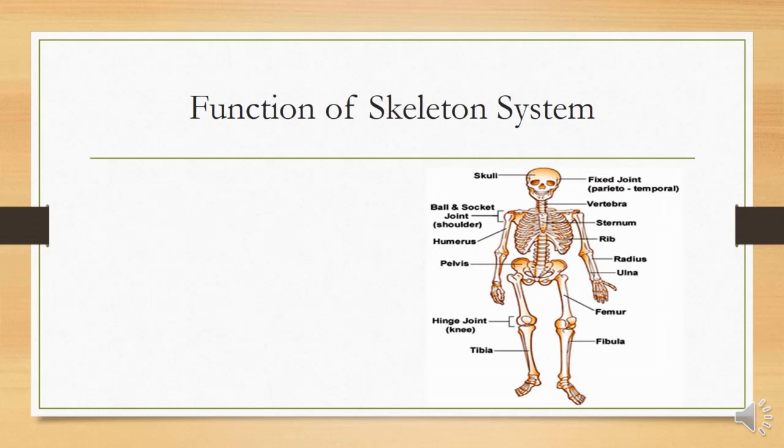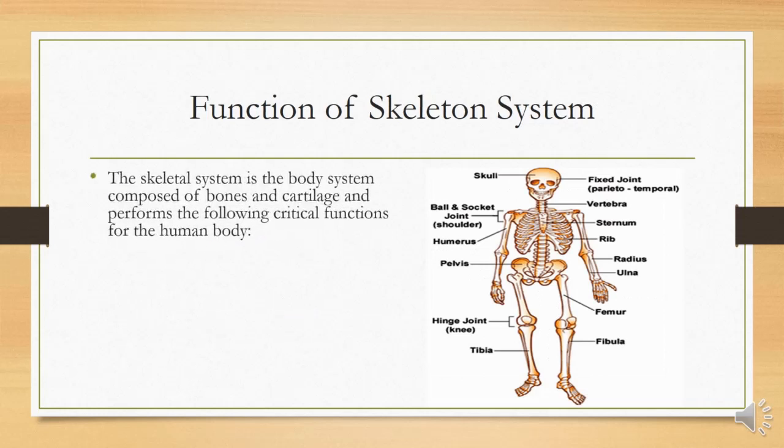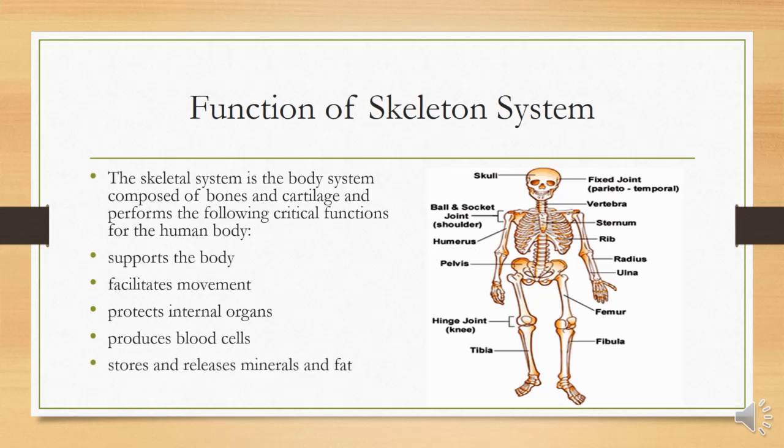The main functions of the skeleton system: the skeleton system is the body system composed of bones and cartilage and performs the following critical functions for the human body. Number one, it supports the body. Number two, it facilitates movement. Number three, protects internal organs. Number four, produces blood cells. And the last function of this skeleton system is it stores and releases minerals and fats.